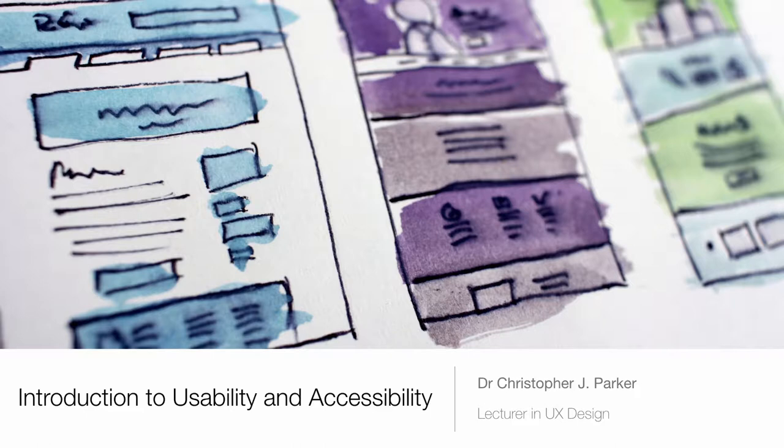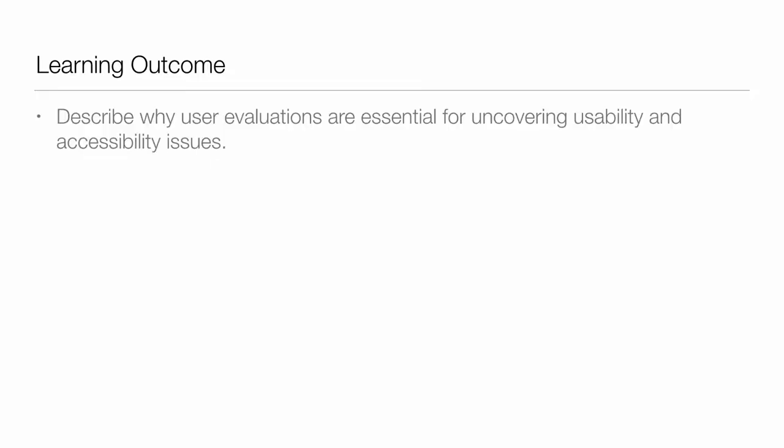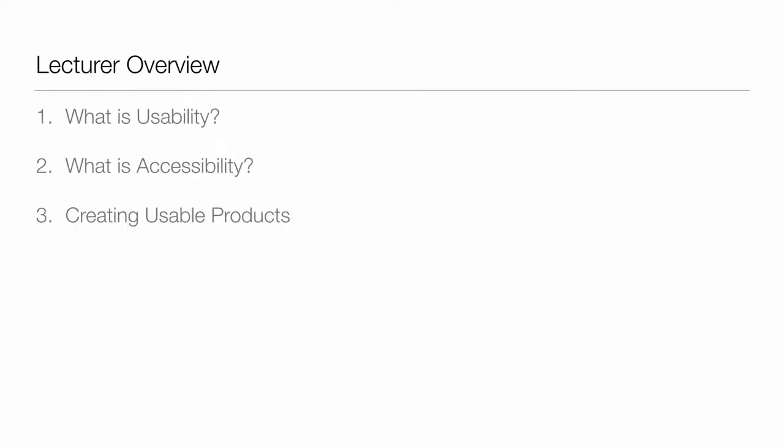We're going into what is important. By the end, you'll be able to describe why user evaluations are essential for uncovering usability and accessibility issues. But most importantly, what is usability? What is accessibility? And how do you create usable products?